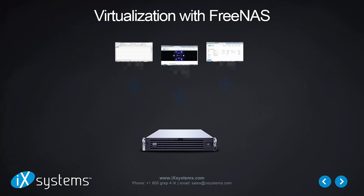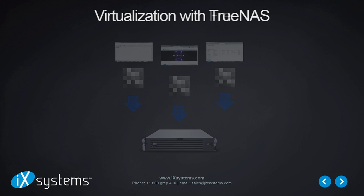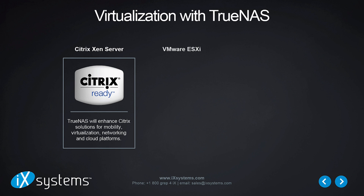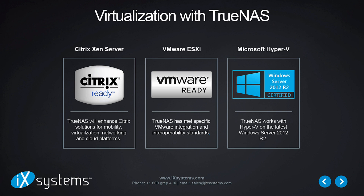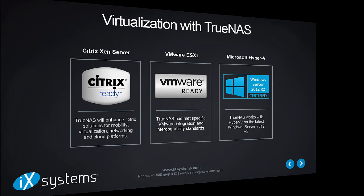FreeNAS is a good choice for VM storage and is known to work with all major virtualization platforms. TrueNAS, however, has third-party hypervisor plugins and has gone through rigorous testing and achieved certification for Citrix XenServer, VMware ESXi, as well as Microsoft Windows Server and Hyper-V, so you can integrate TrueNAS into your VM environment with full confidence.